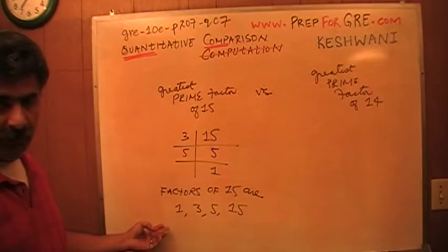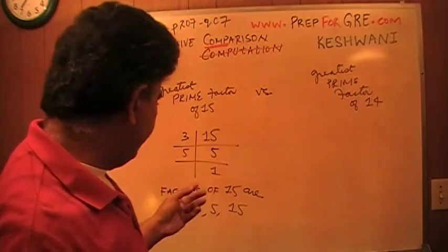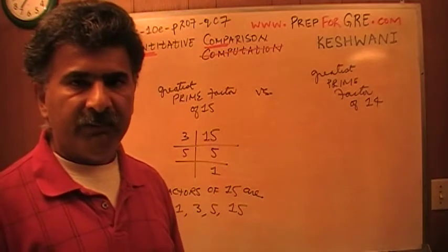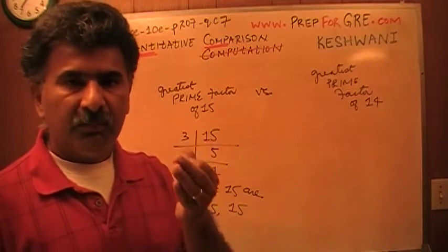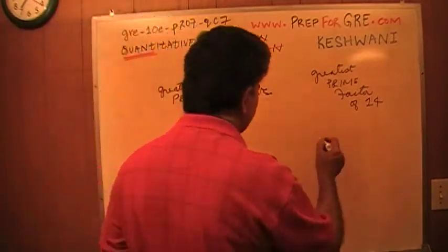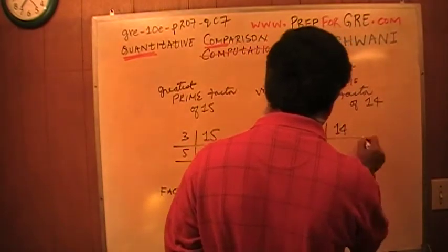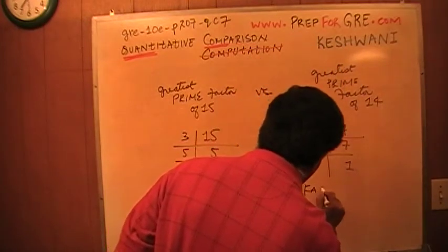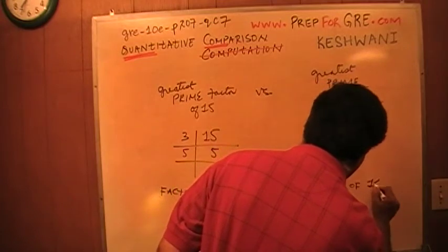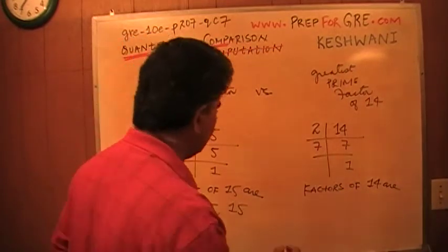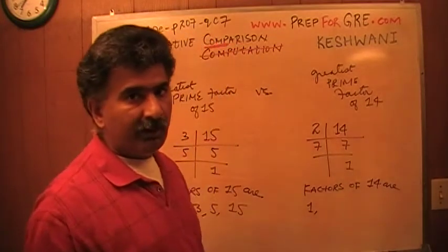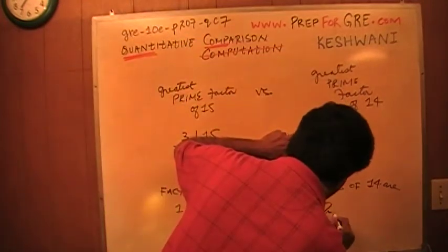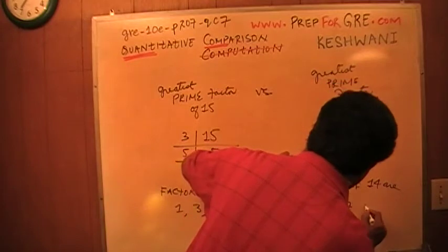These are the factors of 15. All you have to do is figure out how many of them are prime numbers, pick the biggest one, and that is your greatest prime factor. Same thing here — let's figure out the factors of 14. So the factors of 14 are 1 — always start with 1, don't forget 1 and don't forget the number itself — so you put them in order so you don't miss anything: 1, 2, 7, and 14.